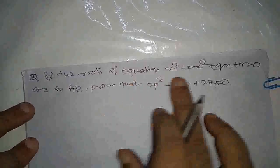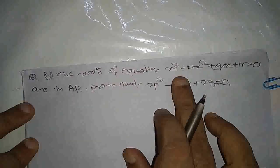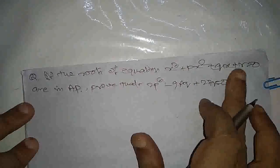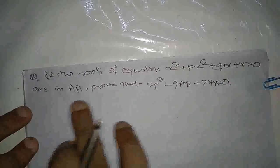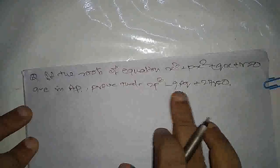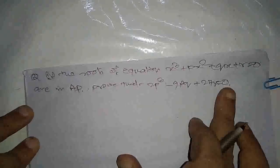Hello, the question is: if the roots of equation x³ + px² + qx + r = 0 are in AP, prove that 2p³ - 9pq + 27r = 0.